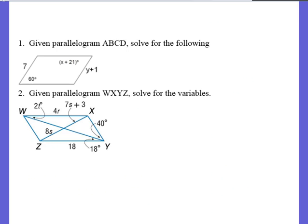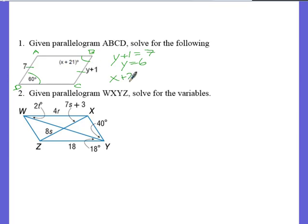Let's take a look at an example problem. It says, given parallelogram ABCD, solve for the following. We know it's a parallelogram, so all of the properties of a parallelogram apply. That means we can say opposite sides are congruent. So to solve for y, set those two things equal to each other — y equals 6. To solve for x, opposite angles in a parallelogram are congruent, so set those two things equal to each other. Subtract 21 from both sides and we get x equals 39.